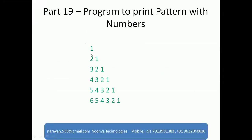We need to print values here. In the first row we print one value, in the second row we print two values. So we need to get the row number first, then get the column values. For this purpose, we need to use two for loops — one for rows and another one for columns.